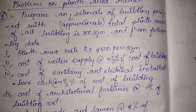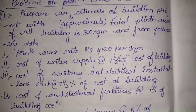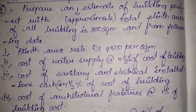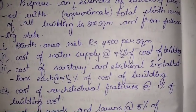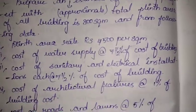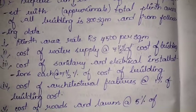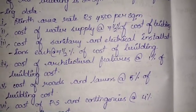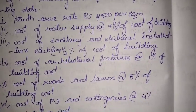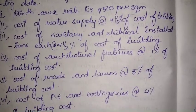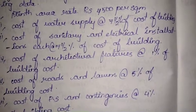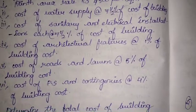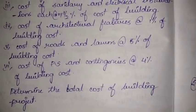Let's solve the first example: prepare an approximate estimate of a building project where the total plinth area is 800 square meters. The given data is: plinth area rate is 4500 per square meter; cost of water supply is 7.5% of total building cost; cost of sanitary and electrical installations each at 7.5% of building cost; cost of architectural features at 1% of building cost; cost of roads and lawns at 5% of building cost; and contingencies at 4% of building cost. Determine the total cost of the project.